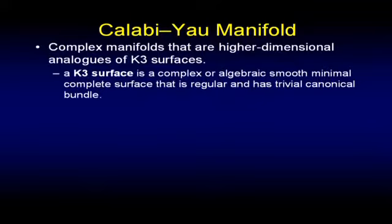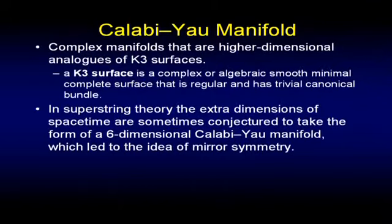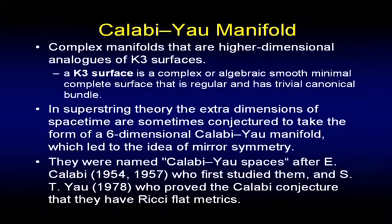That's a Calabi-Yau manifold — I know you've always wanted to see one of those. It's a complex manifold that is a higher-dimension analogy of K3 surfaces: a complex, algebraic, smooth, minimal, complete surface that is regular and has trivial canonical bundles. In superstring theory, the extra dimensions of space-time are sometimes conjectured to take the form of a six-dimensional Calabi-Yau manifold, leading to the idea of mirror symmetry. They were named after E. Calabi, who first studied them, and S.T. Yau, who proved the Calabi conjecture that they have Ricci-flat metrics.